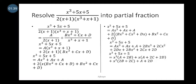We write the partial fractions as A over 2(x + 1) plus (Bx² + Cx + D) over (x² + x + 1). We then multiply both sides by the LCM, so what we get is x³ + 5x + 5 = A(x² + x + 1) + 2(x + 1)(Bx² + Cx + D).